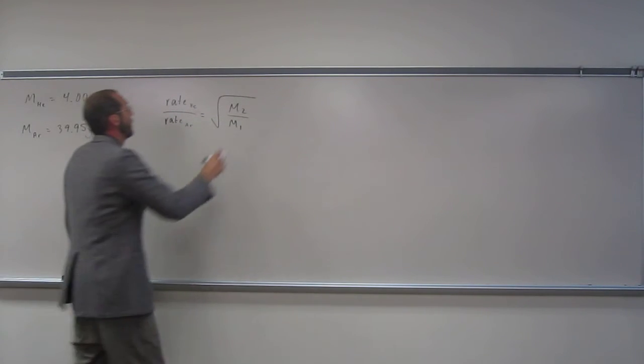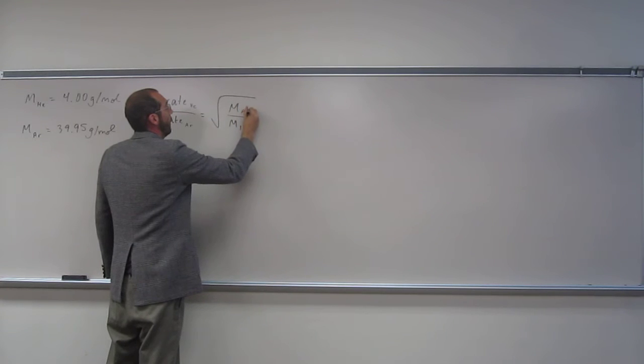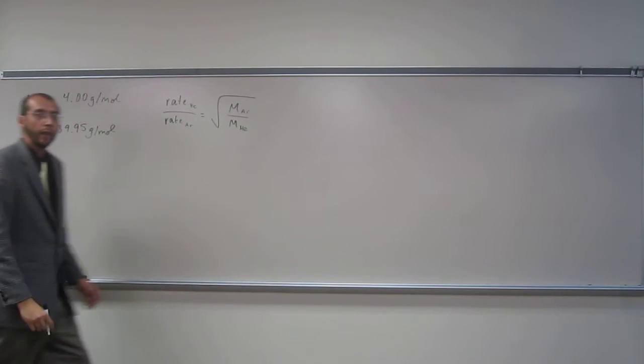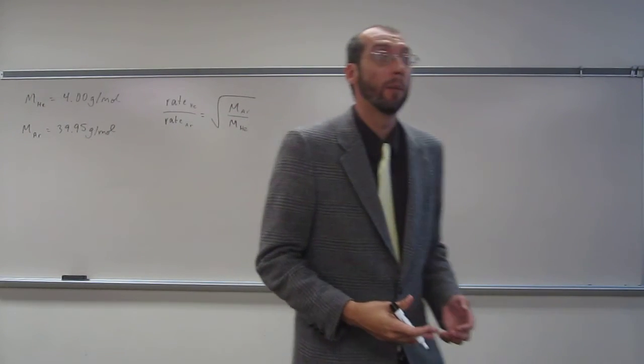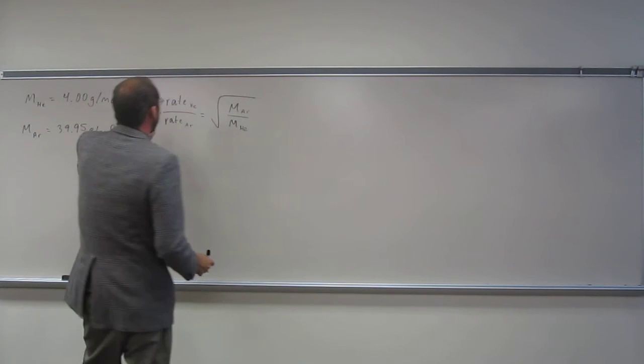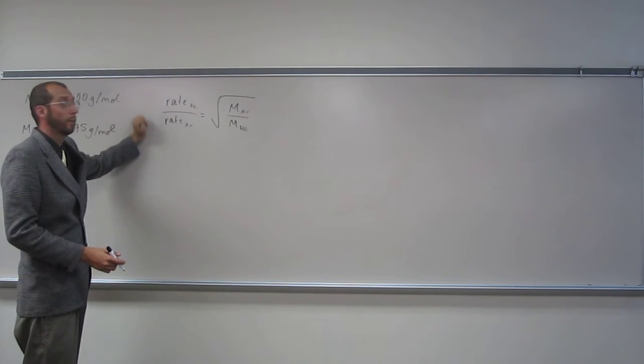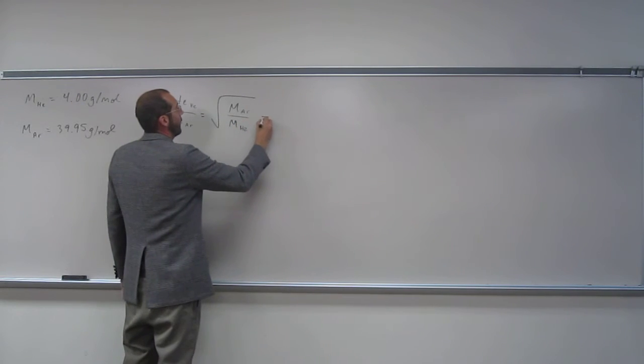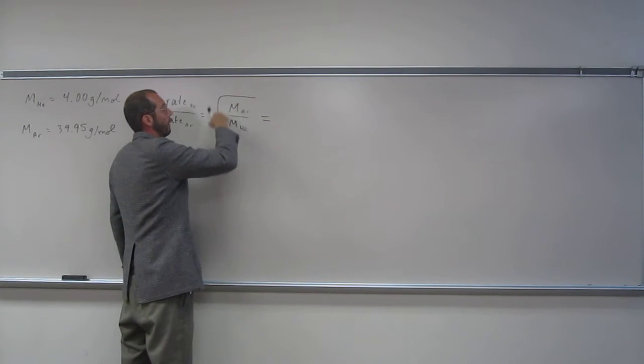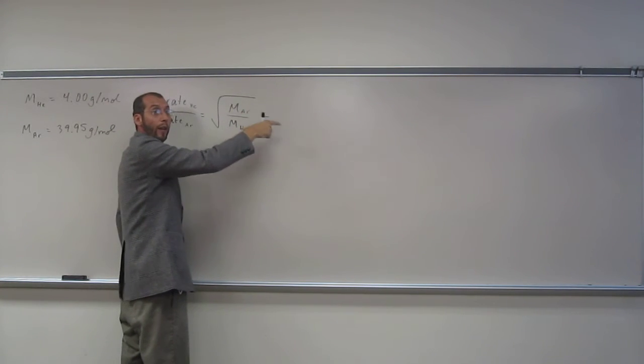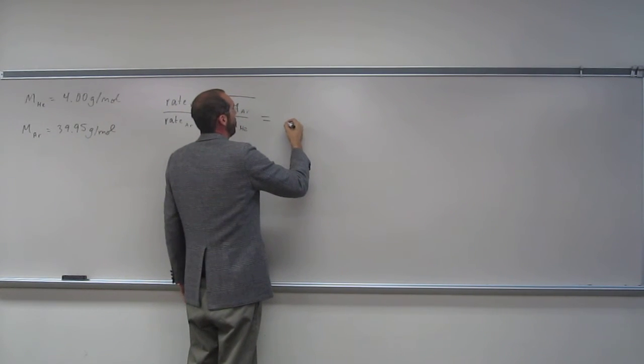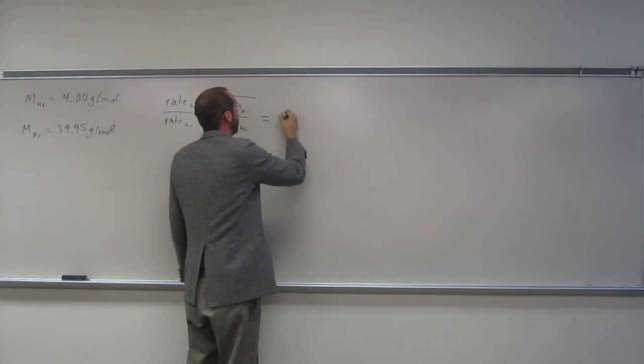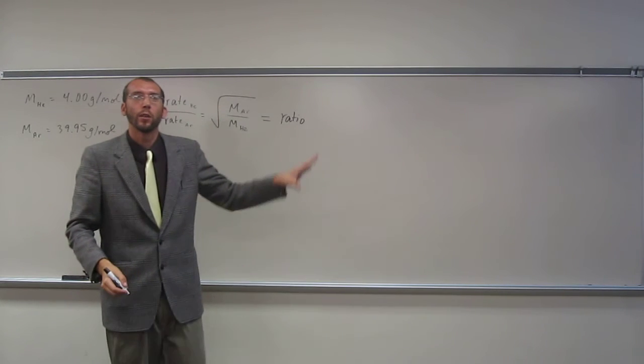So this is going to be then argon, and this will be helium. So notice this problem didn't give us any rate information at all. It just asks us how many times faster is helium going to be? So what it's really looking for is this ratio here. So in other words, what we need to figure out is the square root of the molar mass of argon divided by the molar mass of helium. And in this case it says, how much faster? So we'll just say that ratio.